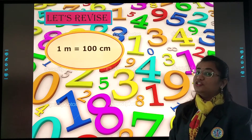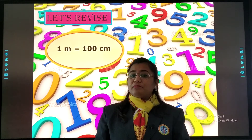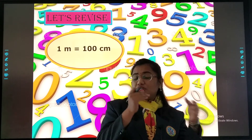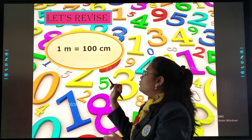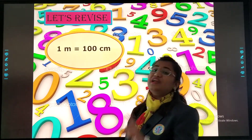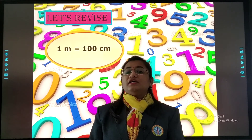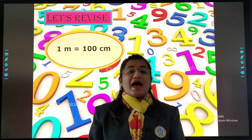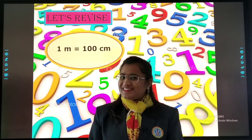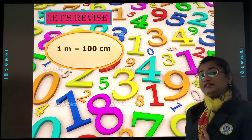Let's revise. Dear children, we have studied about a lot of units and we have seen which unit is equal to which. First: 1 meter is equal to 100 centimeters. Dear children, learn this by heart — it will help you, and I will ask you. So 1 meter is equal to 100 centimeters.